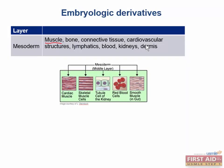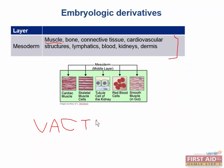These are important structures to memorize for Step 1. In terms of more clinical relevance, there is a mesodermal defect sequence called VACTERL: vertebral defects, anal atresia, cardiac defects, tracheoesophageal fistula, renal defects, and limb defects. All of these are associated with mesoderm.